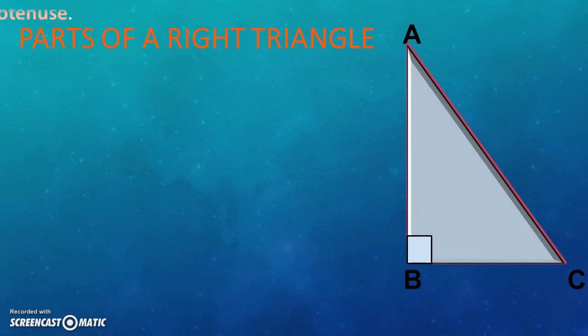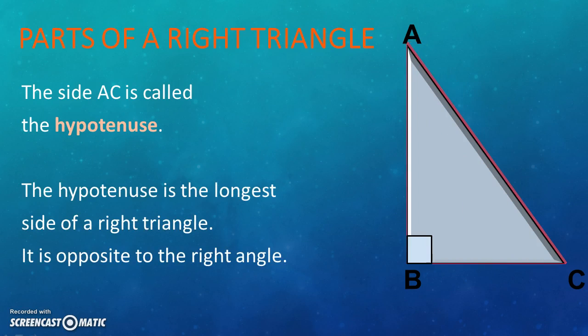The side AC in this triangle is known as hypotenuse. Hypotenuse is the side that faces the right angle and it is the longest side of the right angle triangle.